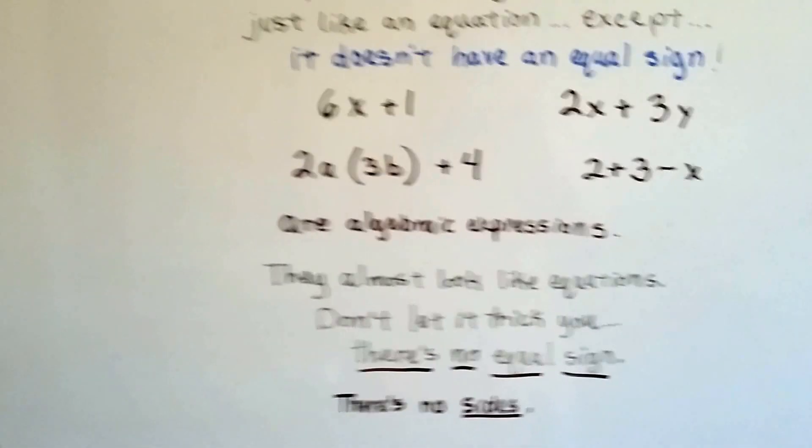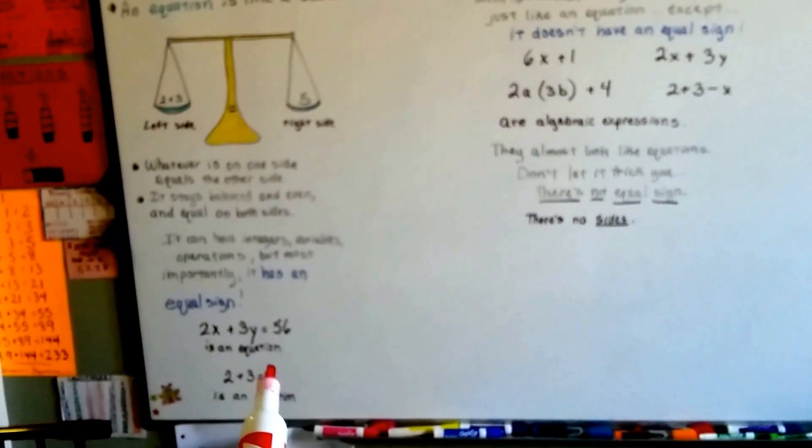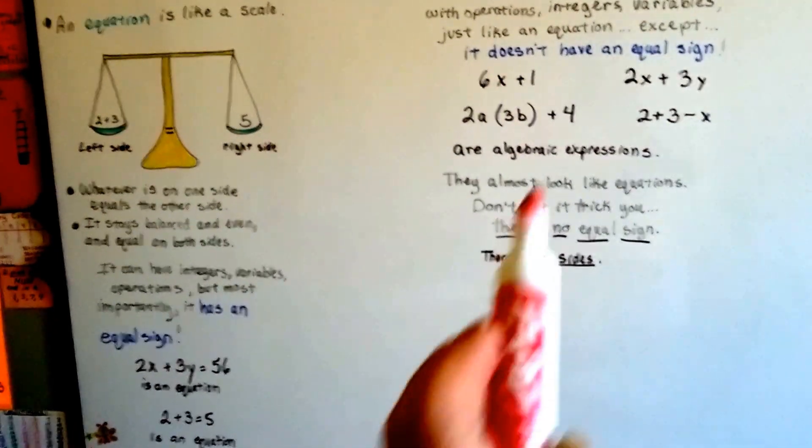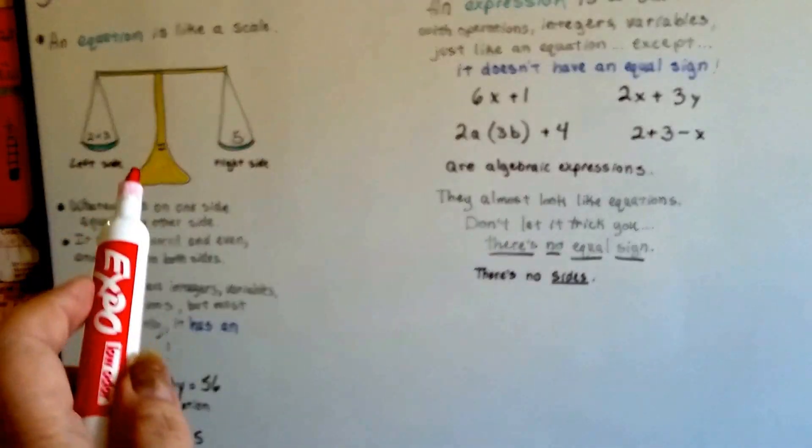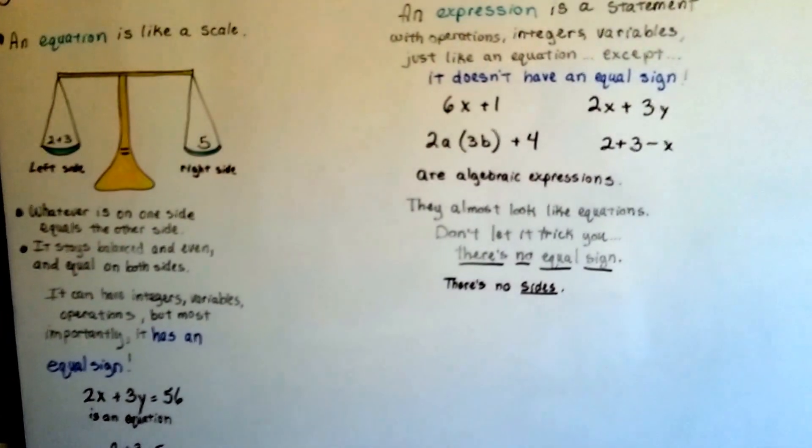That is an expression, right here, and these with the equal sign are the equations, okay? Just look for an equal sign, and you know it's an equation, and it's like a scale. An expression is just a statement of a bunch of algebraic terms, okay?